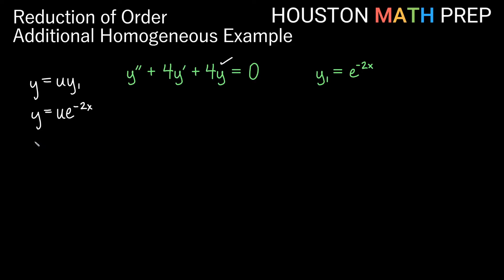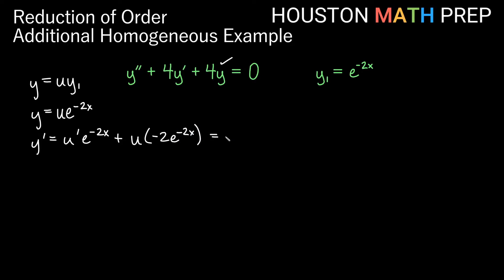We'll need y prime and y double prime as well. So if y is u times e to the negative 2x, this derivative will be a product rule. We'll get u prime times e to the negative 2x plus u times negative 2 e to the negative 2x. So we'll say u prime e to the negative 2x minus 2u e to the negative 2x.